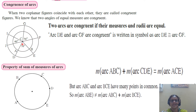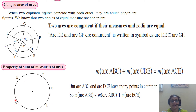Angle DCE is 70 degrees, angle GCF is 70 degrees. Now, the property of sum of the measures of arcs: measure of arc ABC plus measure of arc CDE is equal to measure of arc ACE — that is called arc addition. You can label arc ACE as arc ABE or arc ADE; it is one and the same.